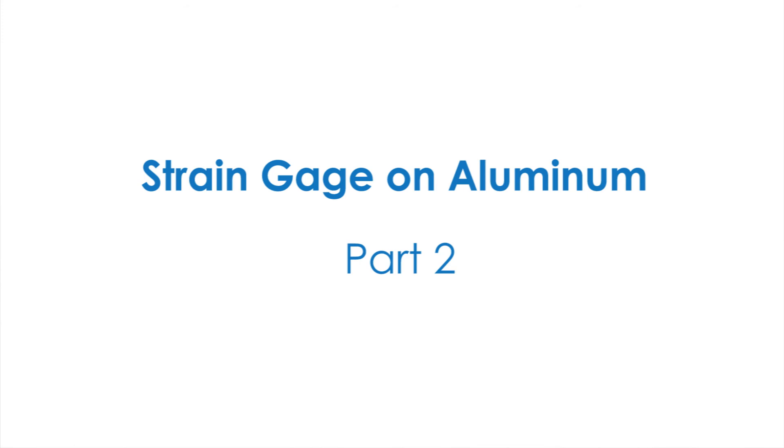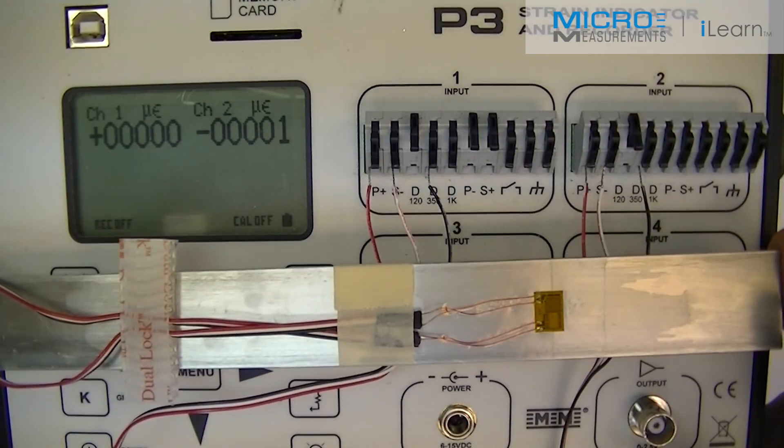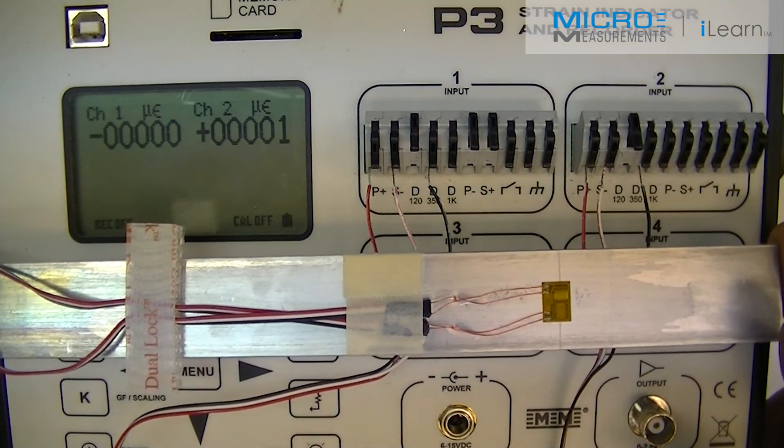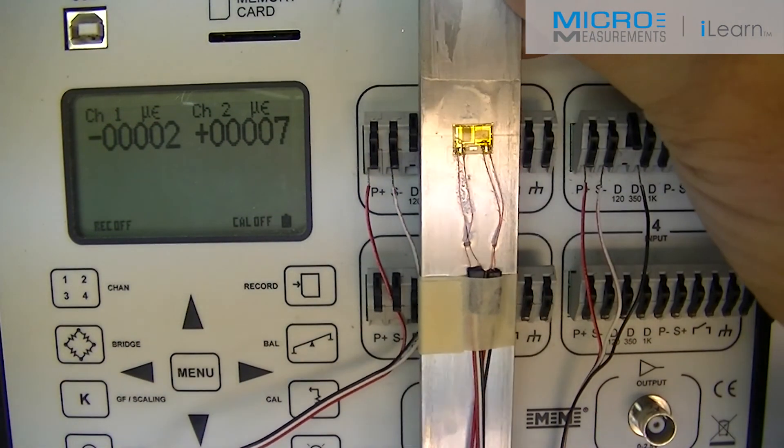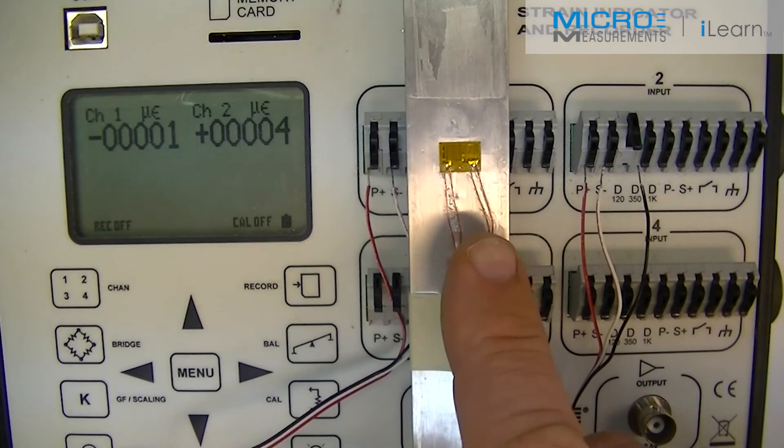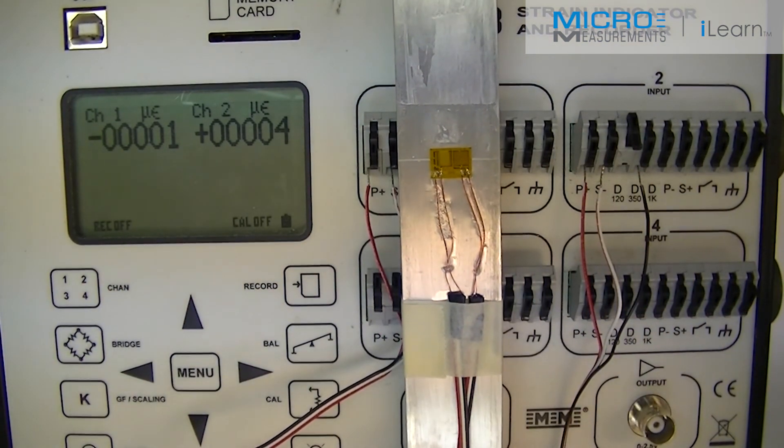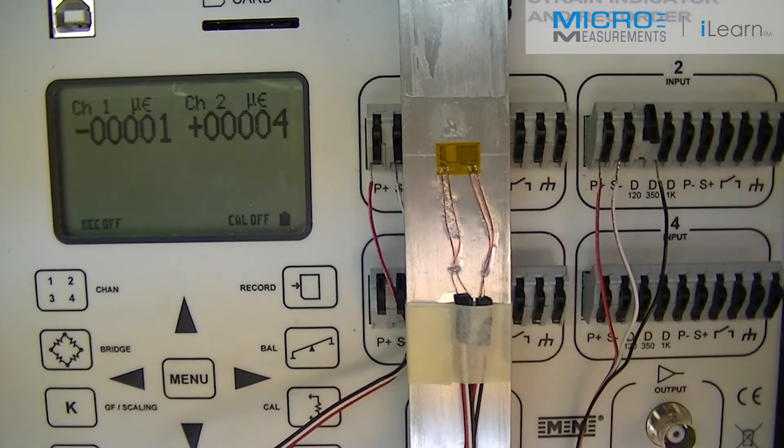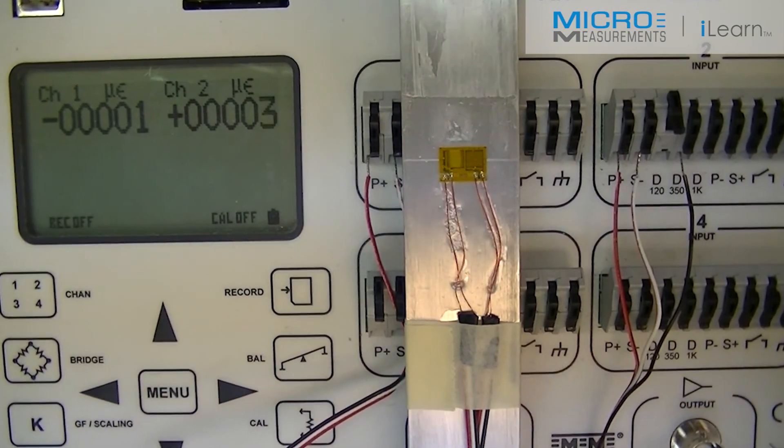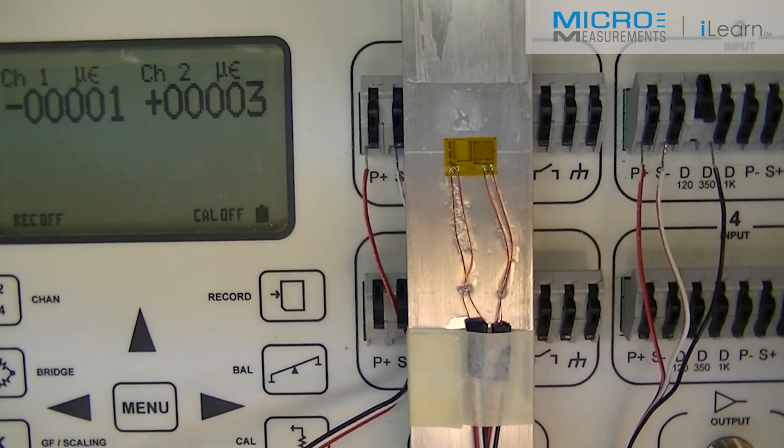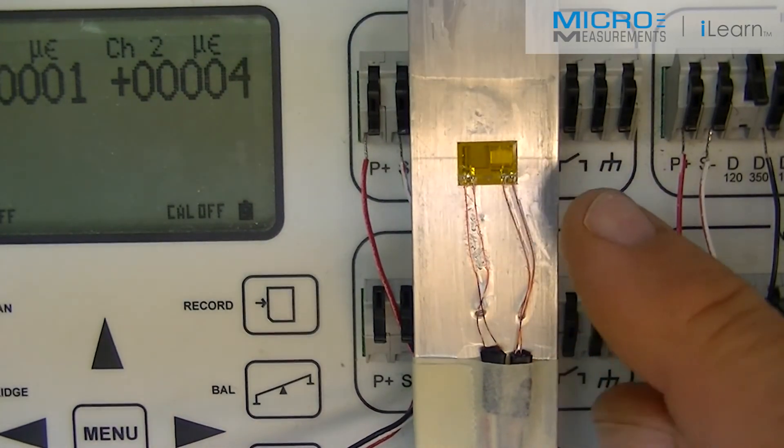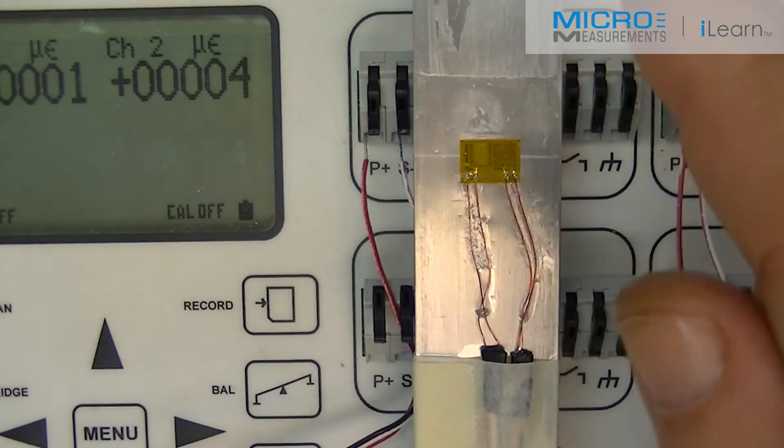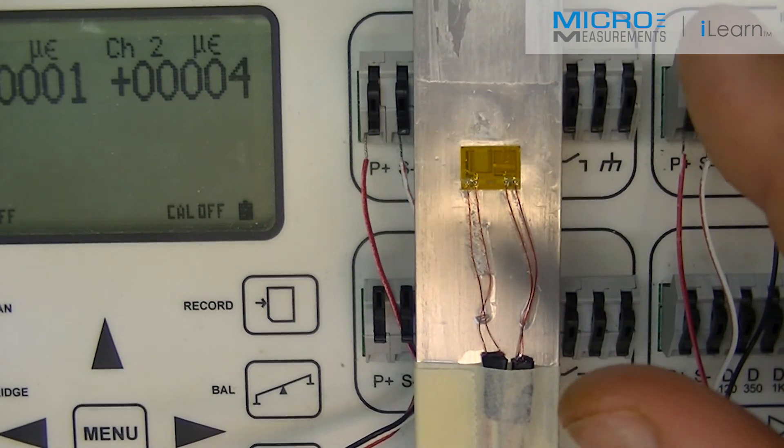Now we have our T-Roseau installed and it's connected to the P3 strain indicator and recorder by Micro-Measurements. I just want to show that the grid on the left is called the Poisson grid. This is in this case the horizontal grid, measuring strain in the horizontal direction. The grid on the right is the linear grid that's measuring strain along the length of the beam.